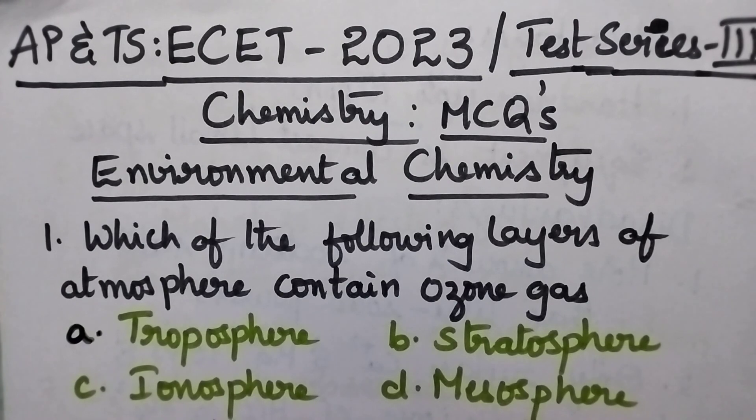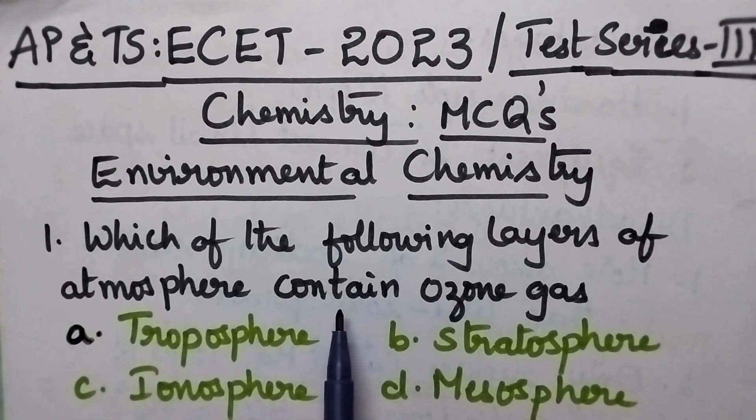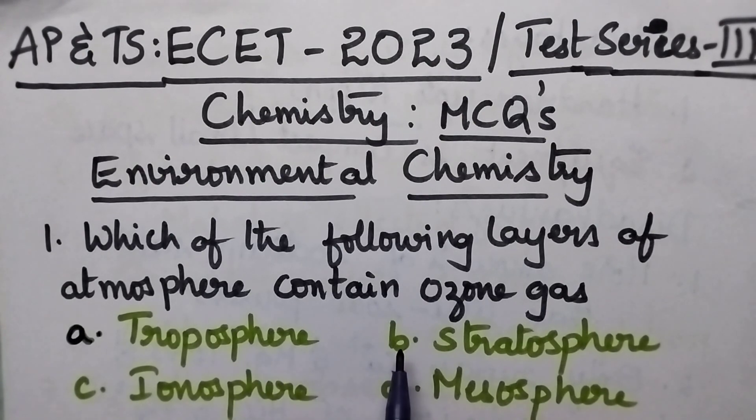Which of the following layers of atmosphere contain ozone gas? Option A: Troposphere, B: Stratosphere, C: Ionosphere, and D: Mesosphere.